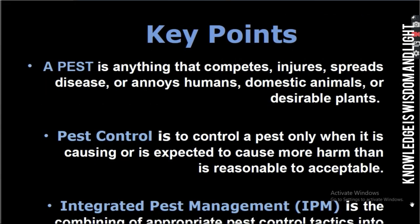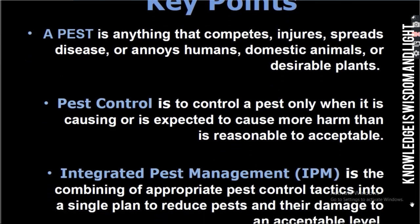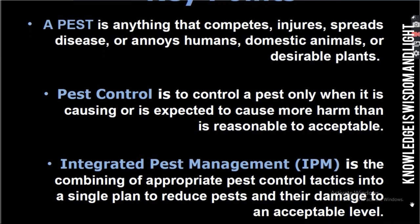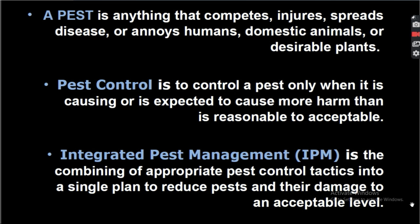Key points: A pest is anything that competes, injures, or spreads disease to humans, domestic animals, or desirable plants. Pest control is to control a pest only when it is causing or expected to cause more harm than is reasonable to accept. Integrated pest management is the combining of appropriate pest control tactics into a single plan to reduce pests and their damage to an acceptable level.